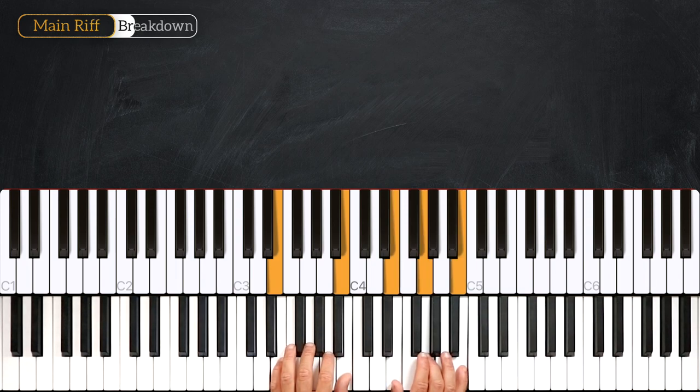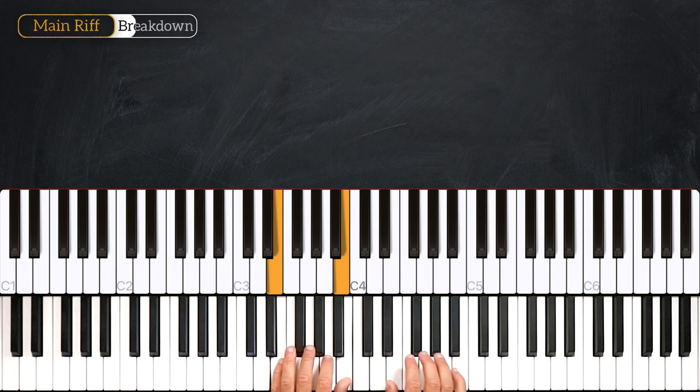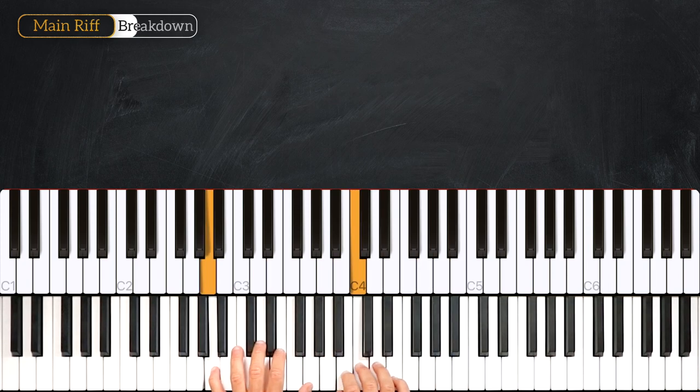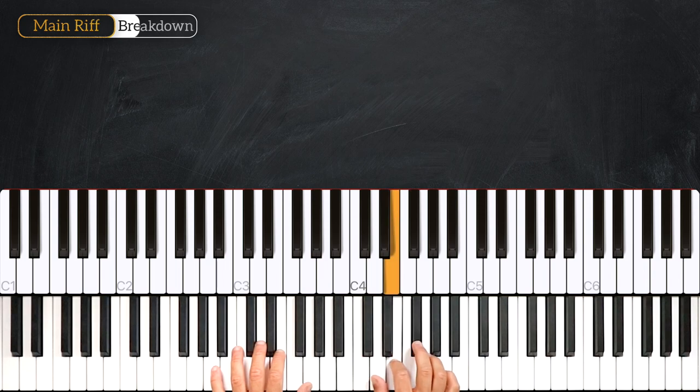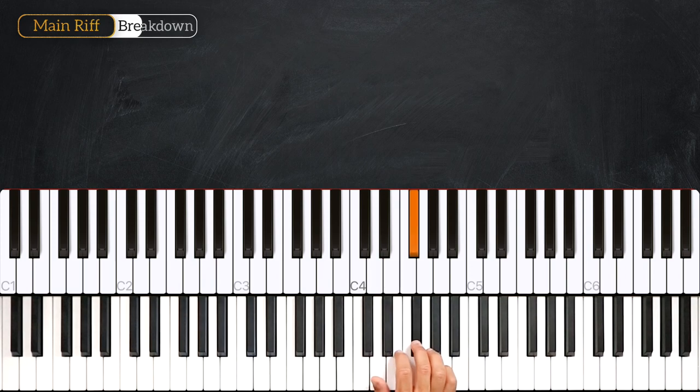Then from here, the right hand will play this melody. Playing F sharp, G, F sharp, E, quickly like this. From here we'll play F sharp, E, D, C, B, C.